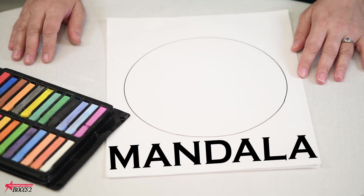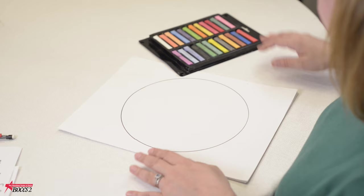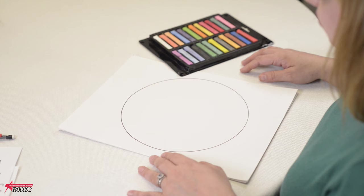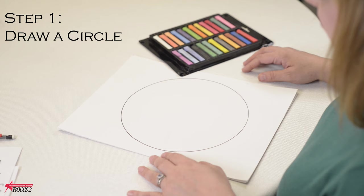We are going to be making a mandala. A mandala is a circle, and it's a design that holds symbolism. So the symbolism is inside of the circle, like on the paper here. I used a bowl to trace a circle onto the paper.